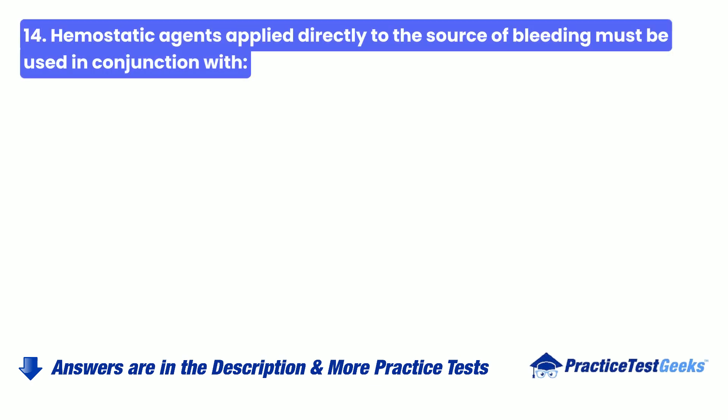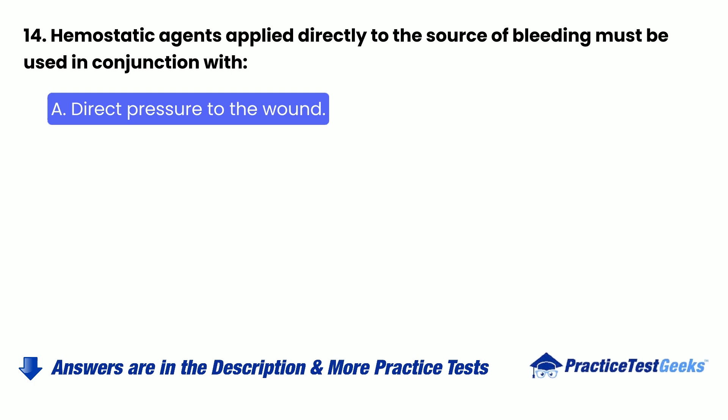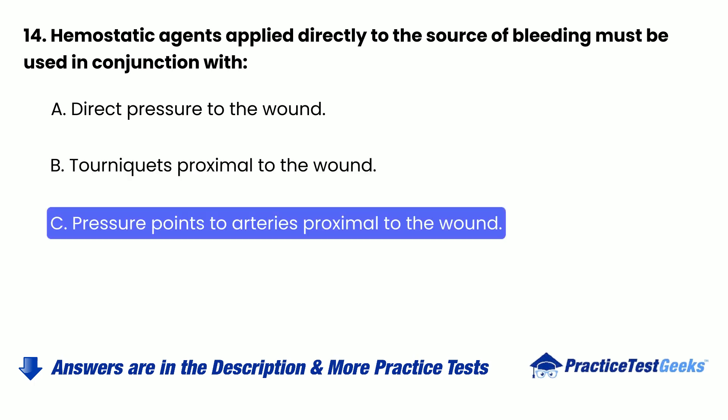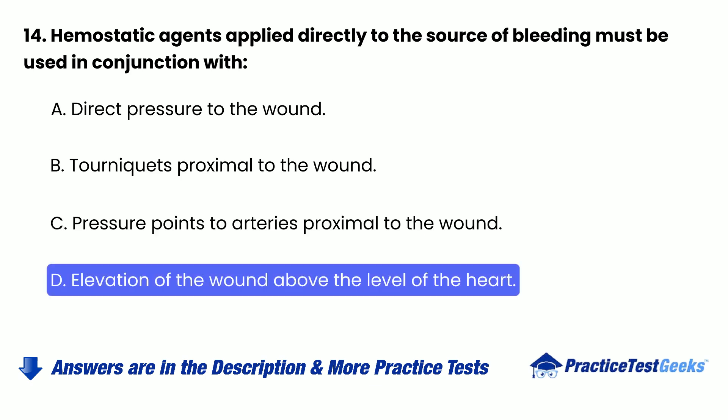Question 14: Hemostatic agents applied directly to the source of bleeding must be used in conjunction with: A. Direct pressure to the wound. B. Tourniquets proximal to the wound. C. Pressure points to arteries proximal to the wound. D. Elevation of the wound above the level of the heart.